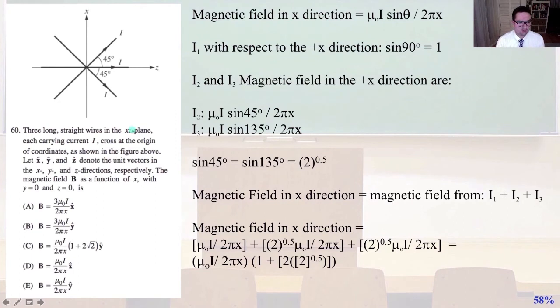Number 63. Long, straight wires in the XZ plane, each carrying current I cross at the origin of coordinates as shown in the figure above. Let X hat, Y hat, and Z hat denote the unit vectors in the X, Y, and Z directions respectively. The magnetic field B as a function of X with Y equals zero and Z equals zero is...